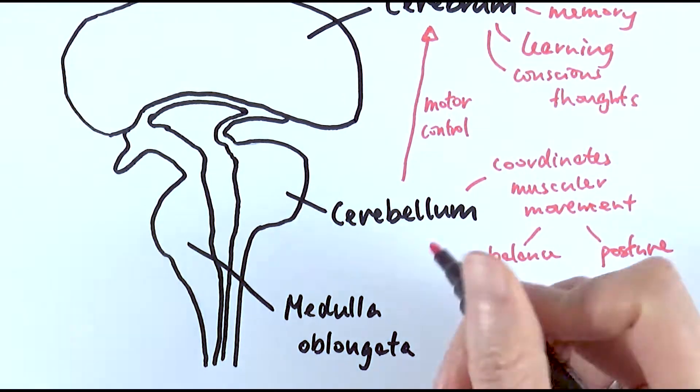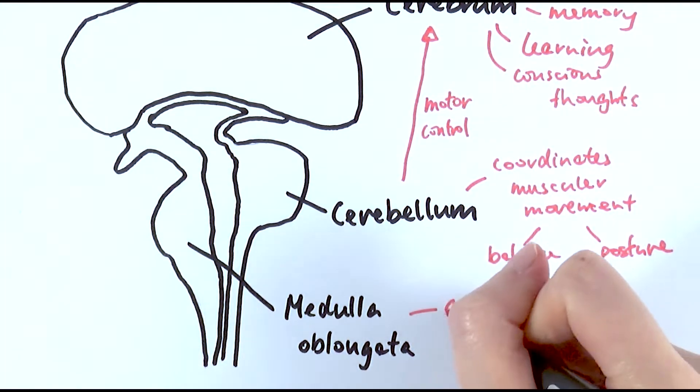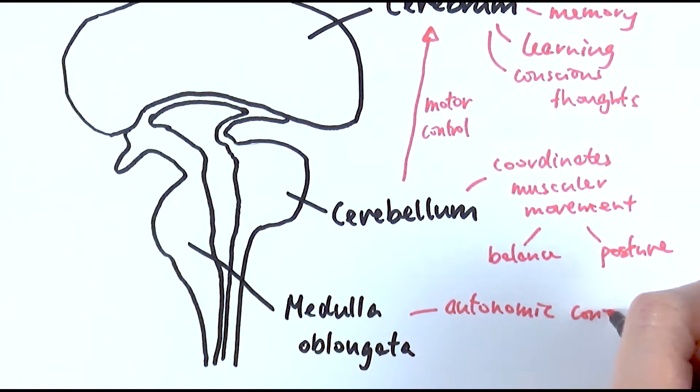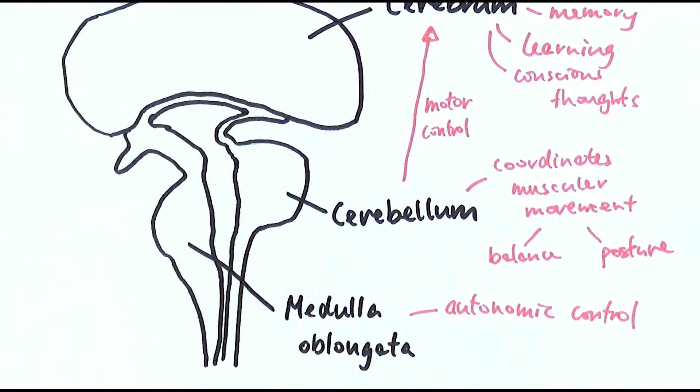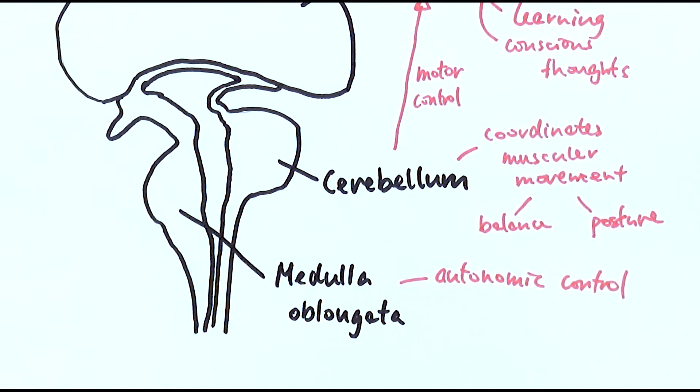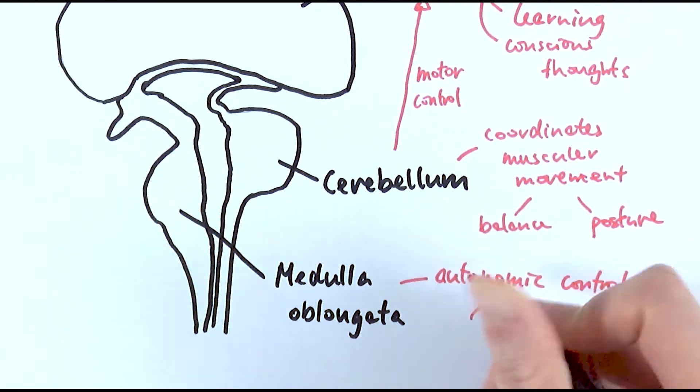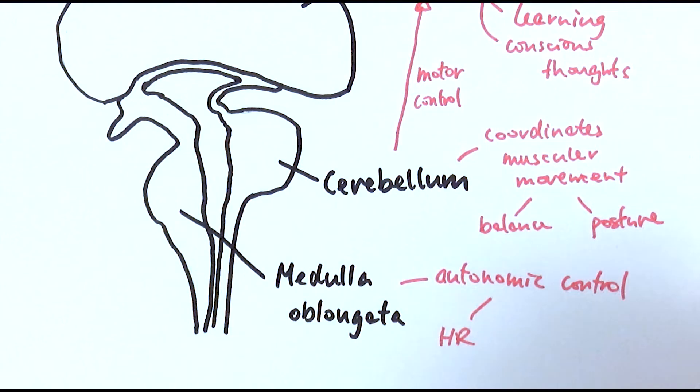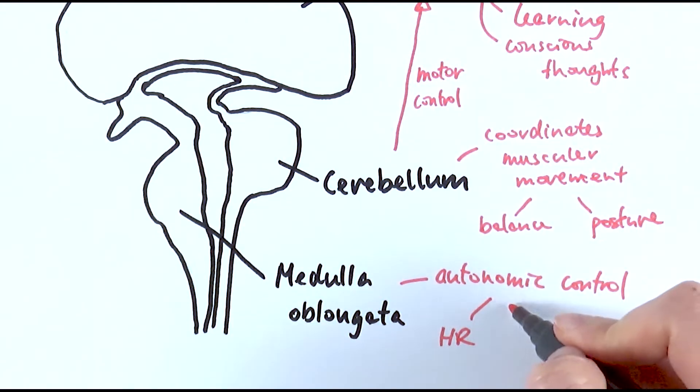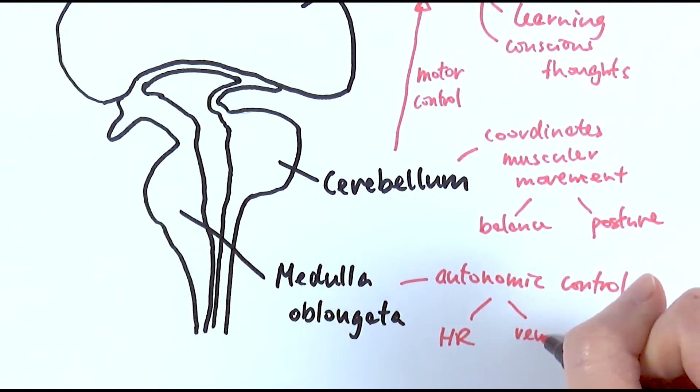So the medulla oblongata has a particular role in terms of autonomic control. We've mentioned this in another video about how our nervous system is organized. Autonomic means subconscious control. So these are things like our heart rate is subconscious, our body just naturally does it for us, and also ventilation, the fact that we are breathing.